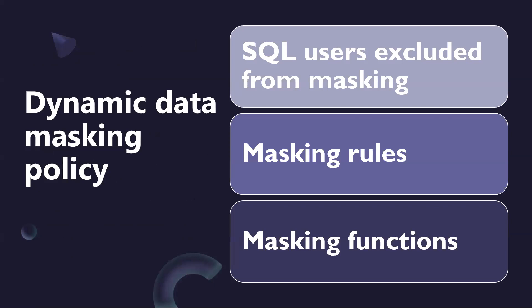What are dynamic data masking policies? There are three policies: SQL users excluded from masking, masking rules, and masking functions. SQL users excluded from masking refers to a set of SQL users or Azure Active Directory identities that get unmasked data in the SQL query results. Users with administrative privileges are always excluded from masking and see the original data without any mask.